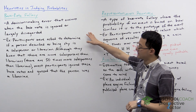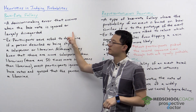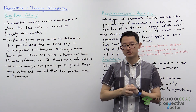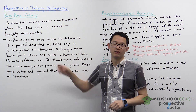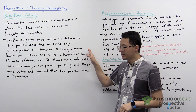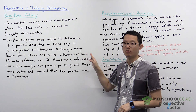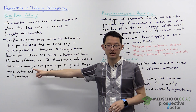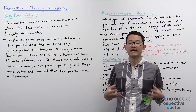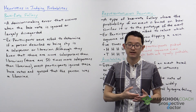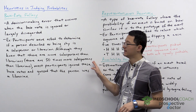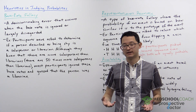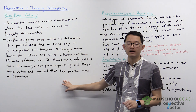The first is the base rate fallacy. This is a decision-making error that occurs when the base rate is ignored or largely disregarded. As an example, participants were asked to determine if a person described as being shy is either a salesperson or librarian. Many of these participants knew that there are 50 times more salespersons than librarians in the U.S., which indicates that this person is most likely a salesperson. However, most of the participants ignored this base rate and instead focused on the idea that this person is shy, guessing they were a librarian.